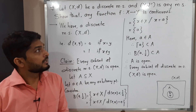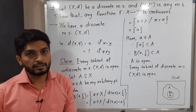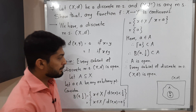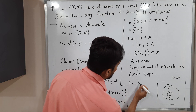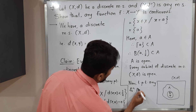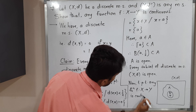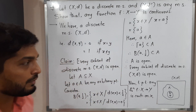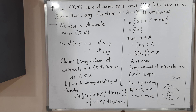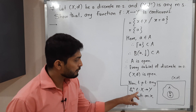Now let us come back to the main result. We have to prove that any function f from X to Y is continuous on X. There are several ways to prove a function is continuous. One is the epsilon-delta definition. Another is: if a sequence x_n converges to x, then the image sequence f(x_n) converges to f(x).